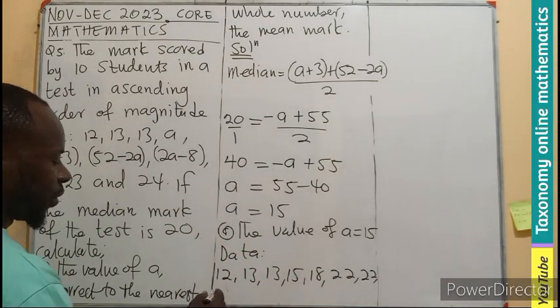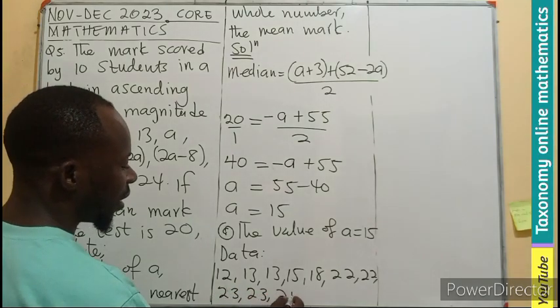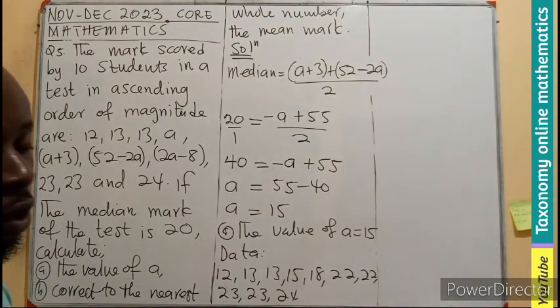23, 23, 23, 24. So this is the data or the number of scores.